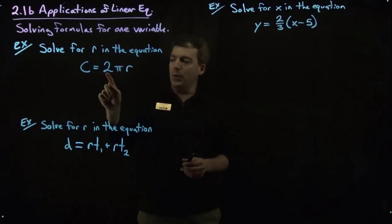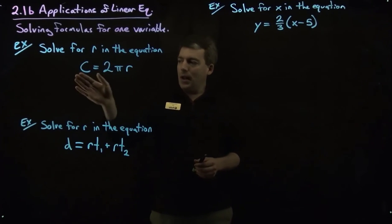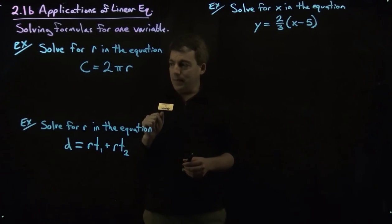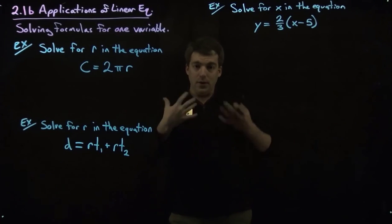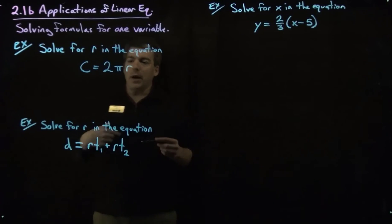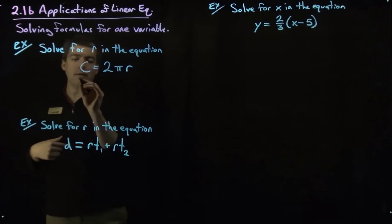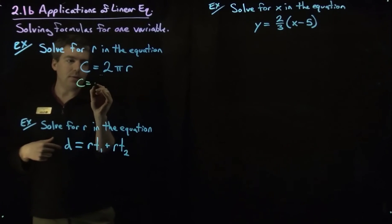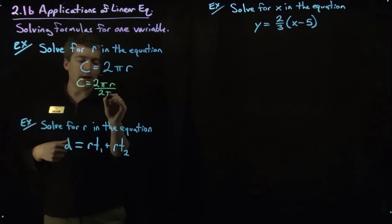Now we see that r is being multiplied by 2 and pi, so this 2 and pi needs to be moved over to the other side with the c. And so since they're being multiplied we need to undo that action which means we need to divide. So we'll divide both sides by 2 pi. So let's write this again. So we have c equals 2 pi r, divide both sides by 2 pi.